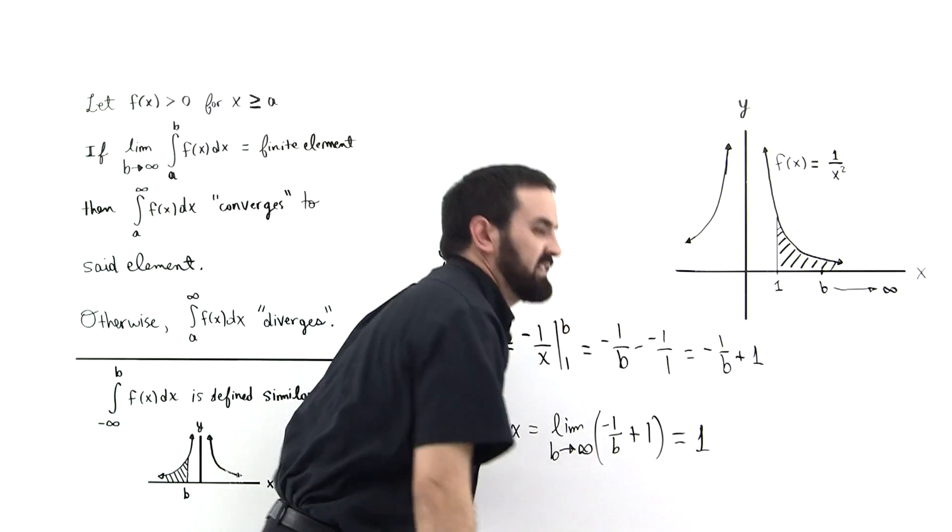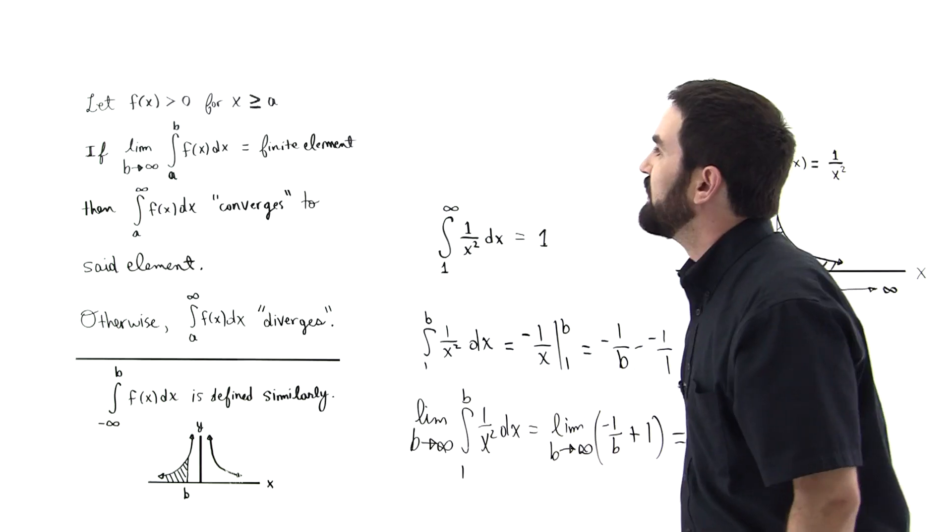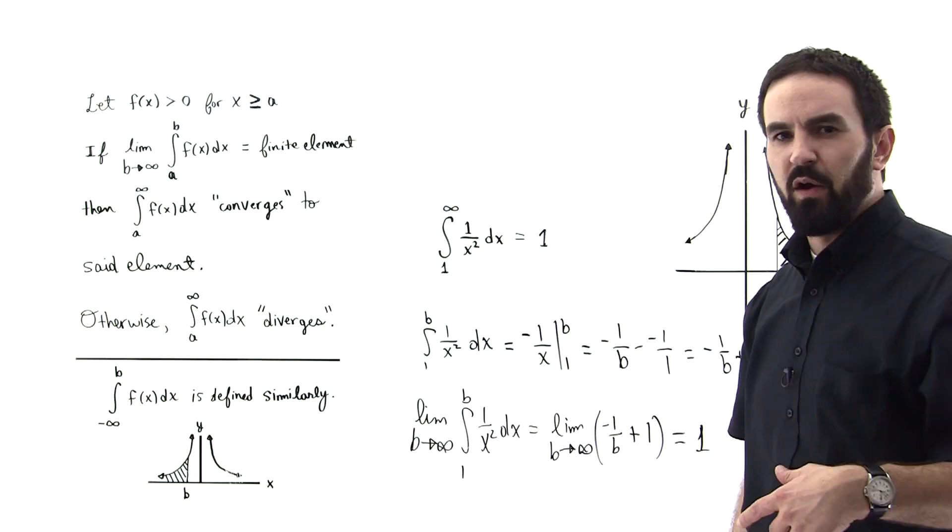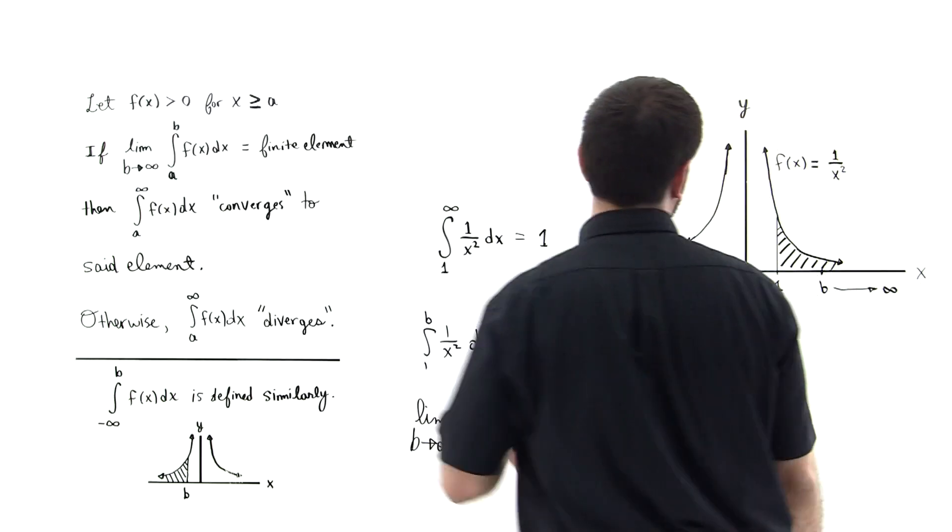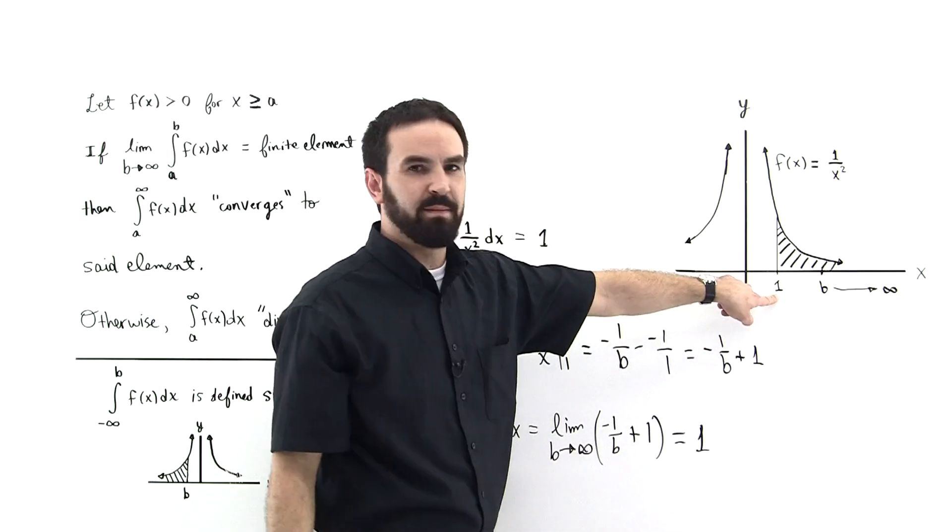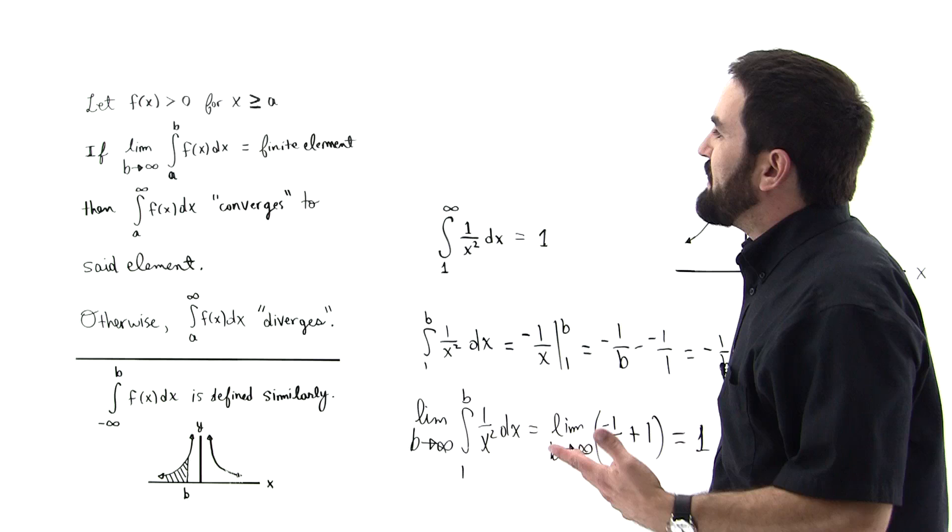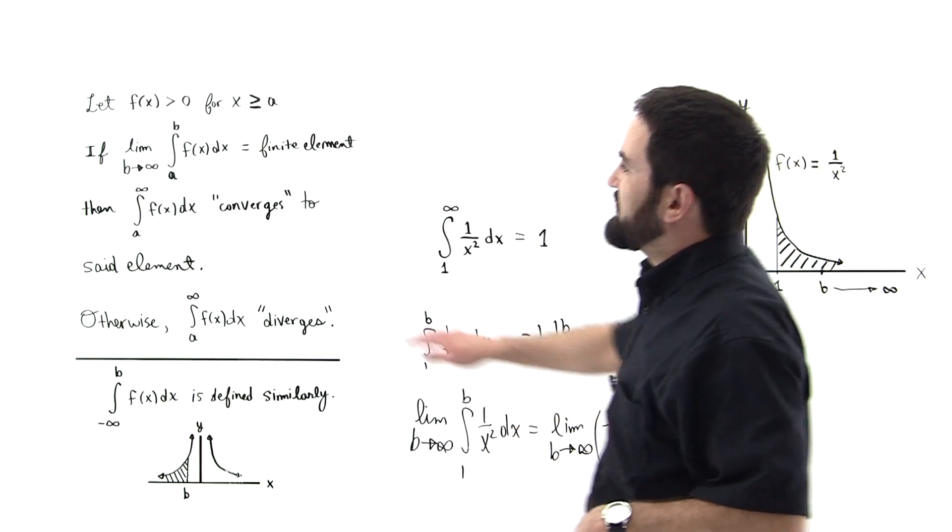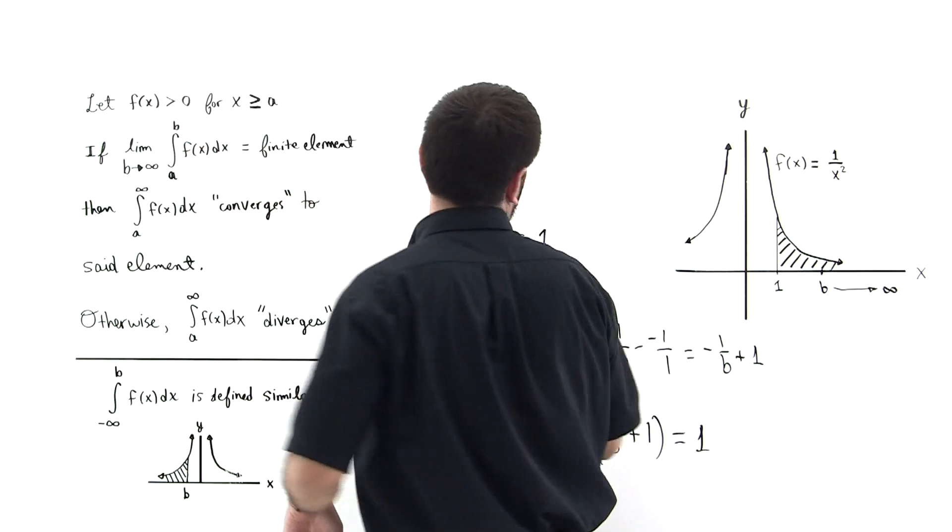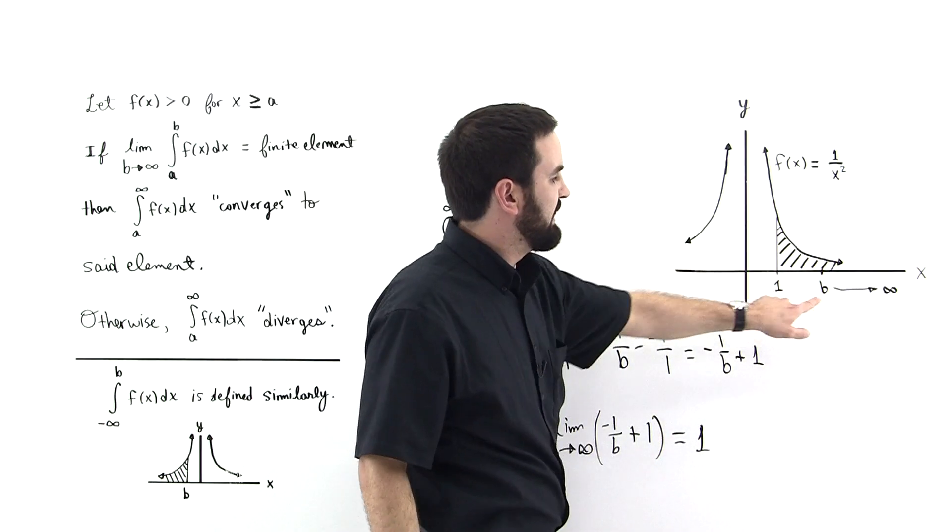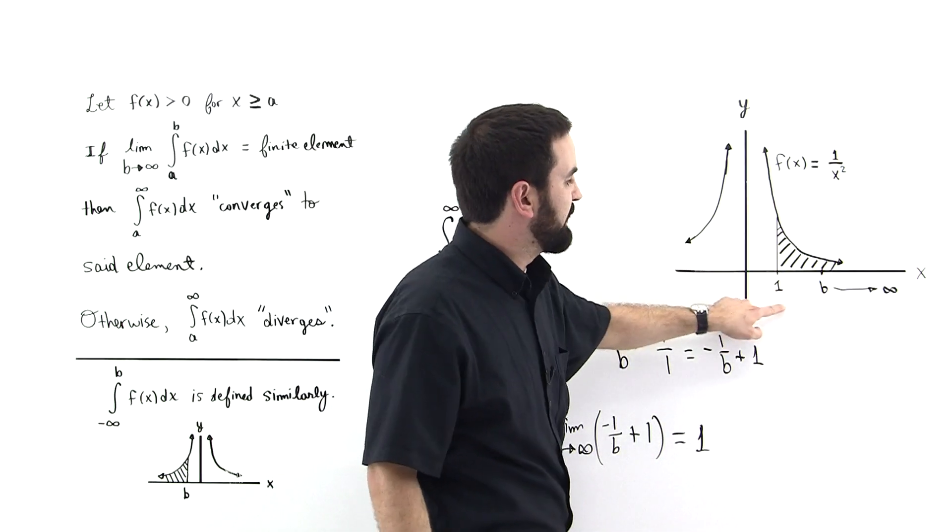So if f(x) > 0 for x ≥ a—so a would be this first limit here—then if the limit as b goes to infinity of this integral from a to b (so in our example, b was here, a was here, so we're integrating this way)...